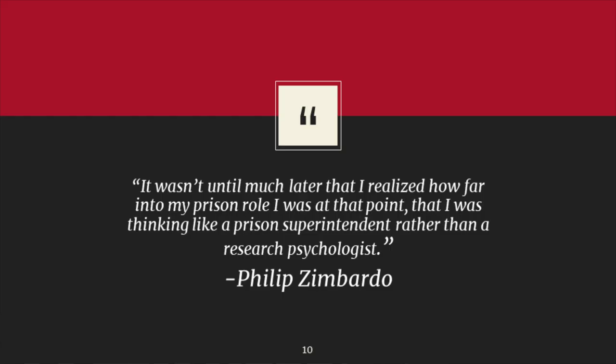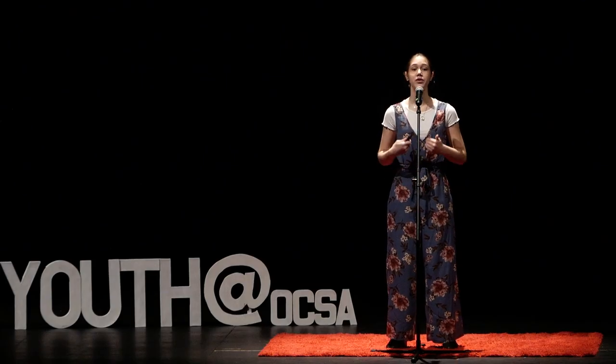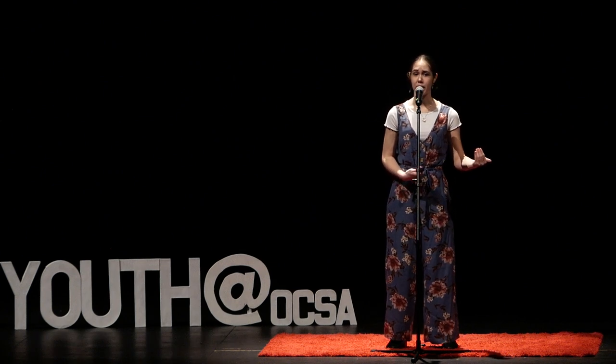In 2008, Zimbardo confessed: 'It wasn't until much later that I realized how far in my prison role I was at that point. I was thinking more like a prison superintendent rather than a research psychologist.' This experiment shows us how roles and labels in society affect us in our mental state and how we can begin to settle into a role so much that we begin to lose the sense of who we are. They suffered from de-individuation, acting with what they believed were normal behaviors for the roles that they played.